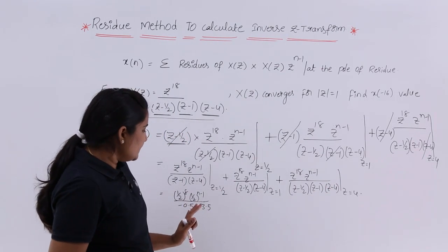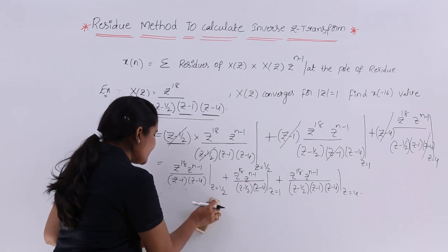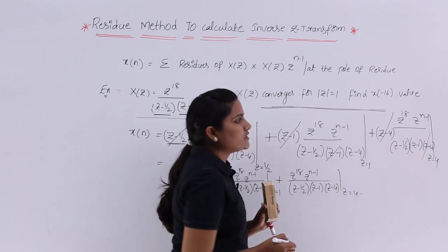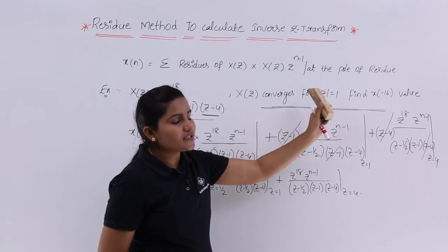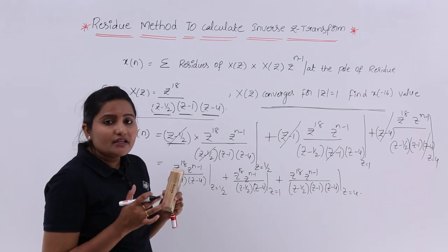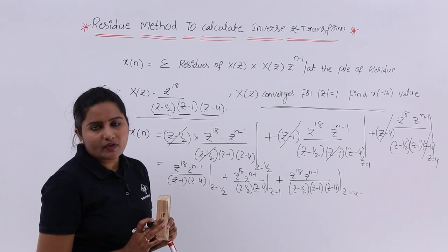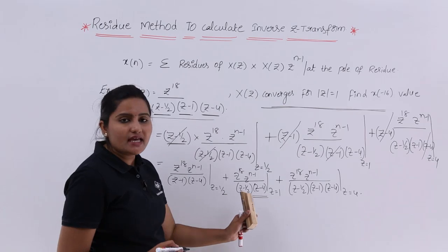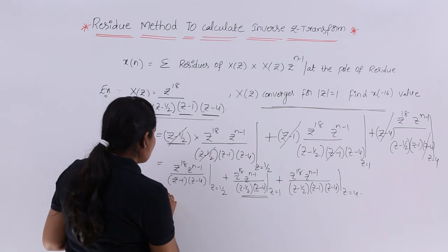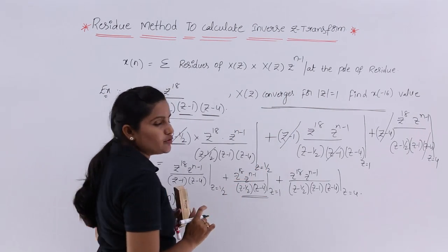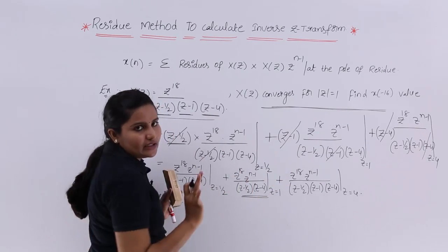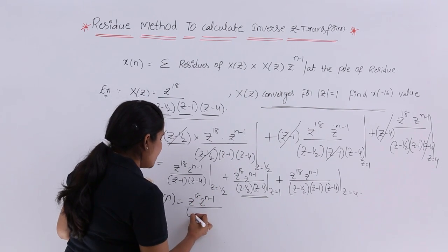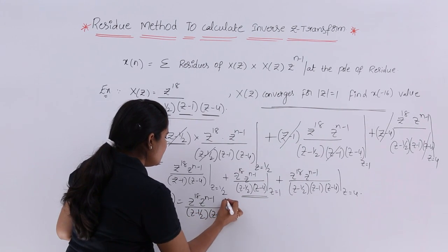Now, there is an important condition: X(Z) converges for |Z| = 1. This means we only consider Z = +1 or -1. All other poles are not considered. Since we have a residue only at Z = 1, that residue alone is used for X(N) — because X(Z) converges for |Z| = 1. If this condition were not given, you would need to calculate everything.